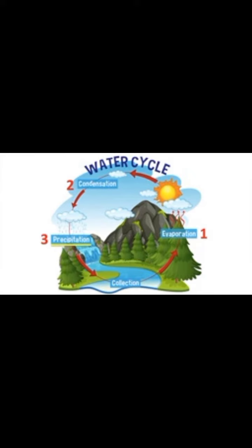When the water falls as rain, hail or snow, it's collected in lakes, rivers and seas. This is the complete water cycle. The cycle then starts all over again.